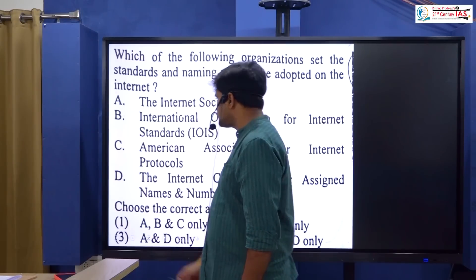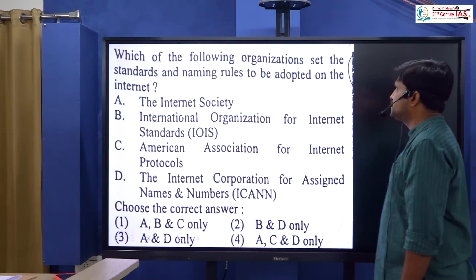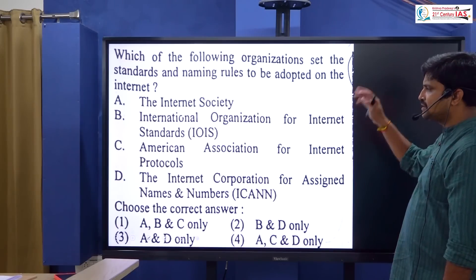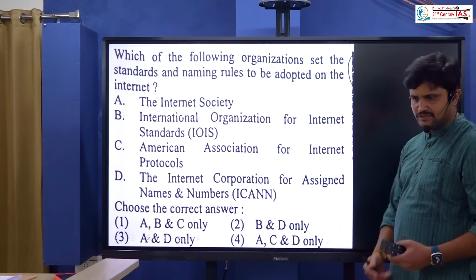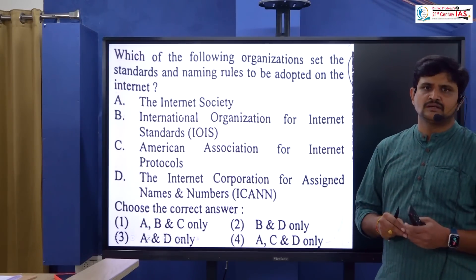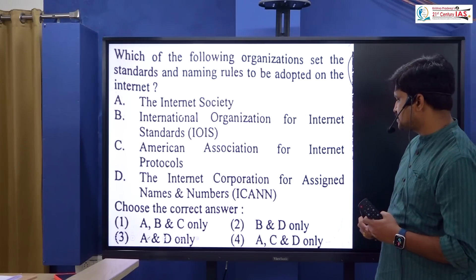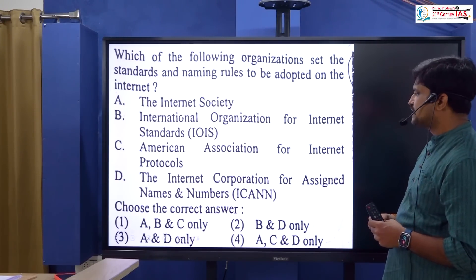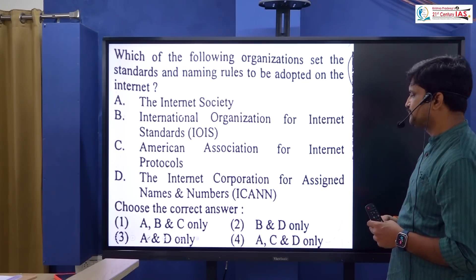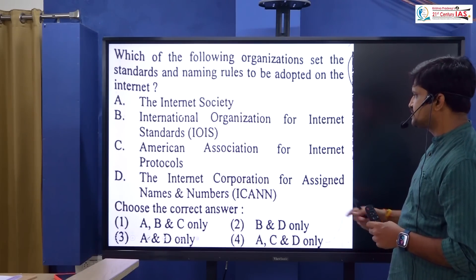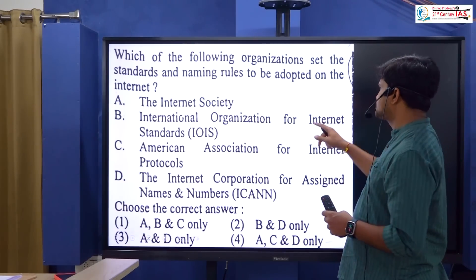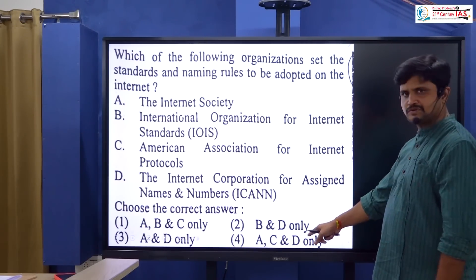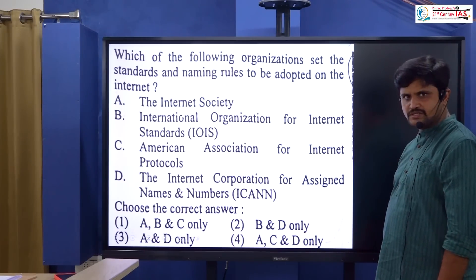Which organization sets the standard and naming rules to be adopted on the internet? Internet protocols and addresses — naming is managed by ICANN, the Internet Corporation for Assigned Names and Numbers. The international organization for internet standards is also relevant. Option B and D — option 2 is the correct answer.